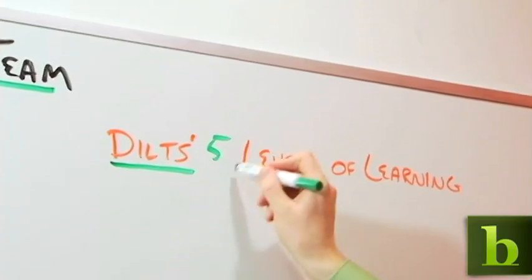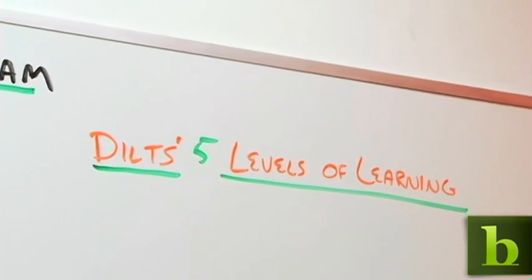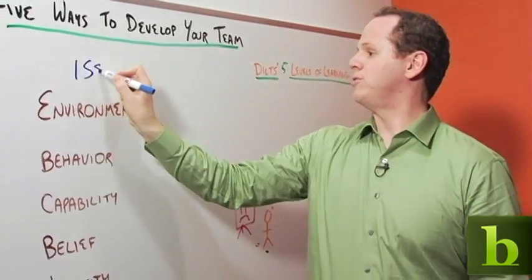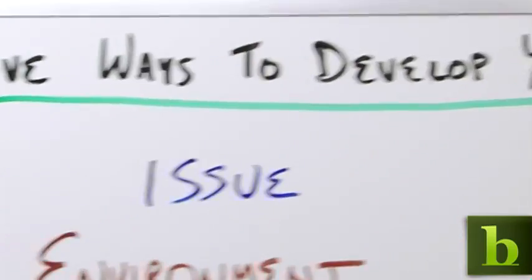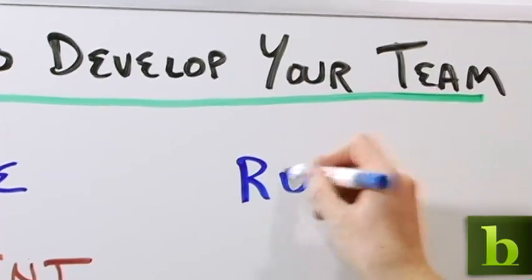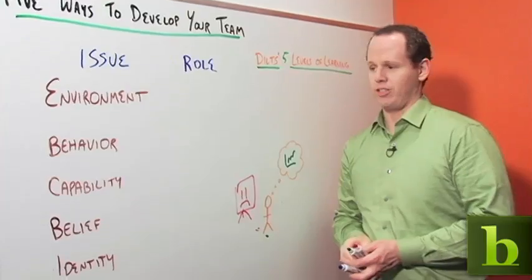Robert Diltz defines five levels of learning that specify two things. First, they specify the issue faced by a learner, and second, they specify the role that you can take to help the learner overcome that issue.